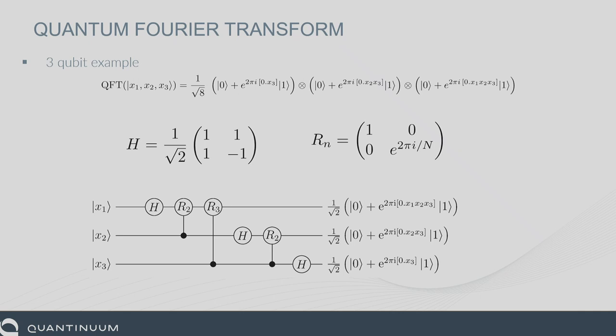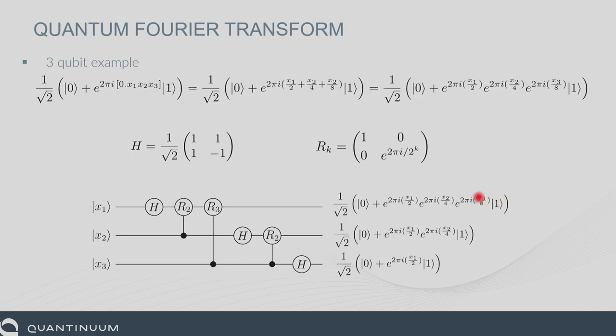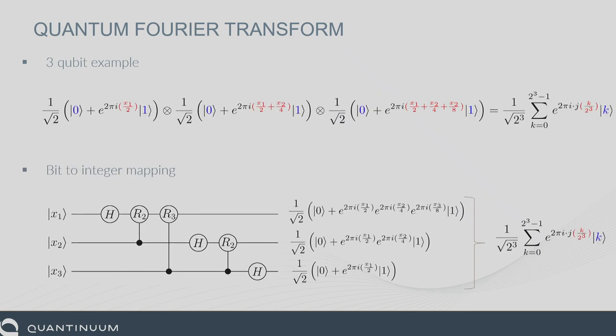When you expand the binary fraction — which is a sum — into its exponential terms, you can see where the quantum Fourier transform comes from: you have an H (Hadamard), then e^{i·2}, e^{i·3}, acting on each qubit. Basically, the map goes from one state to another — from non-Fourier coefficients into the Fourier coefficient state. You've got your bit string state and it goes to this Fourier basis state.